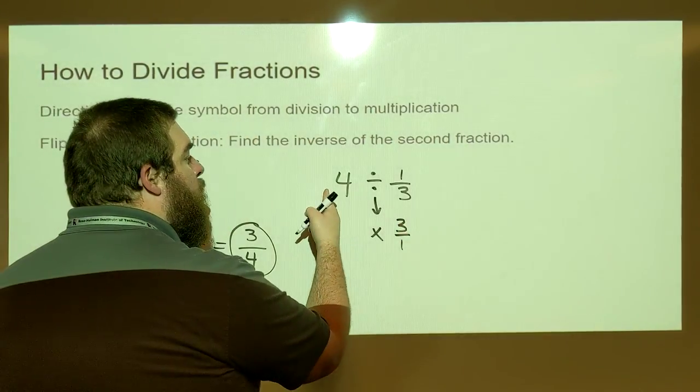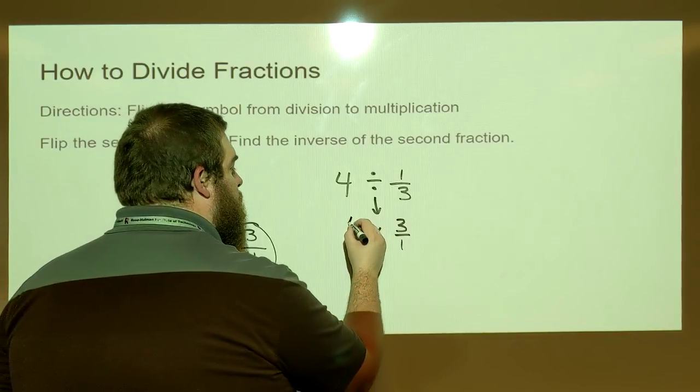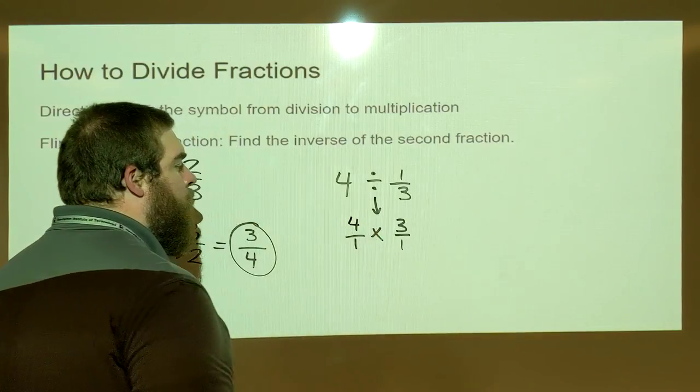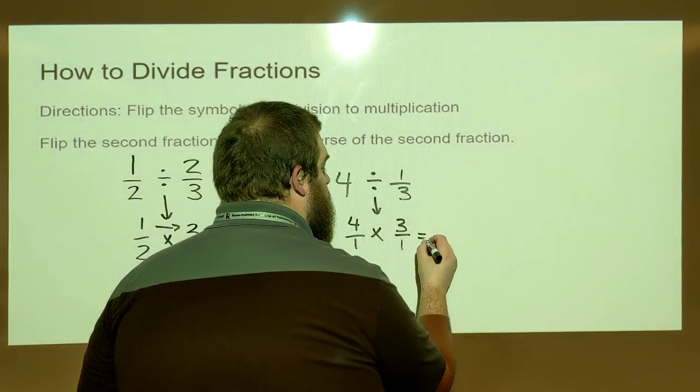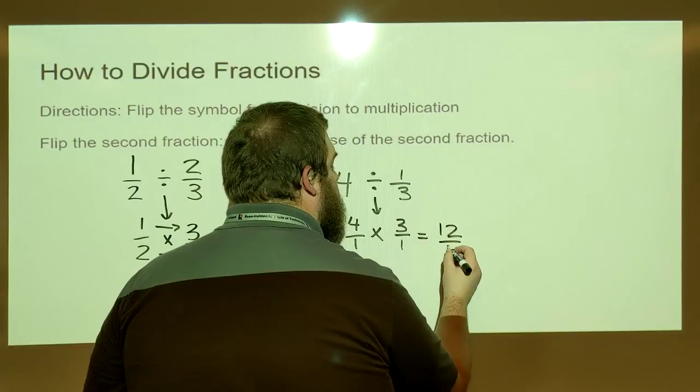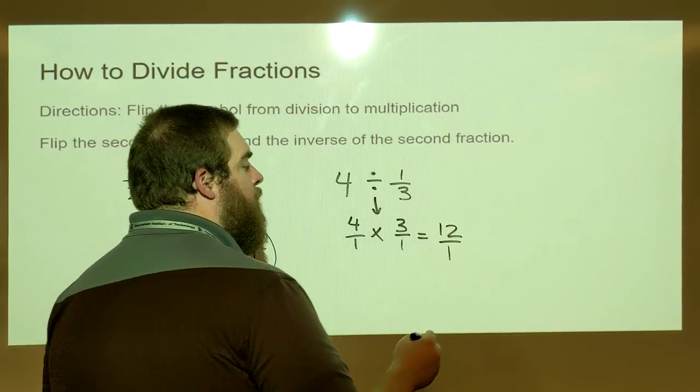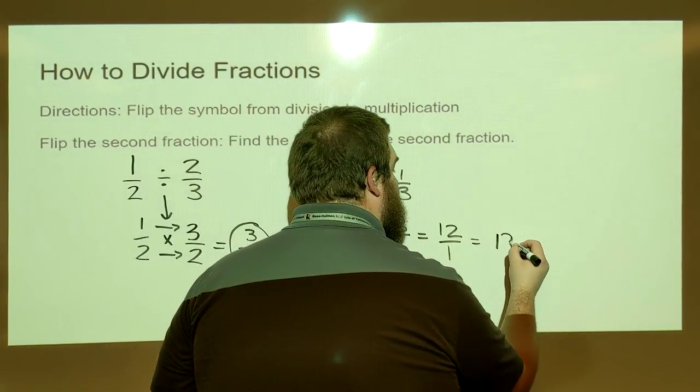Now four as a fraction is four over one or four wholes. Four times three is twelve. One times one is one. Twelve over one is the same thing as twelve.